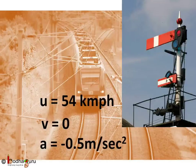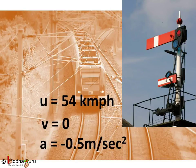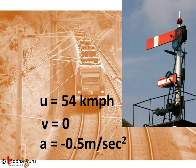Which formula to use? Let us first calculate time it will take to stop. So we know initial velocity u is equal to 54 km per hour. The final velocity v would be 0 as the train needs to stop. And acceleration a is equal to minus 0.5 meter per second square.